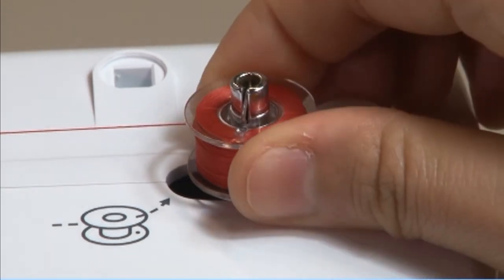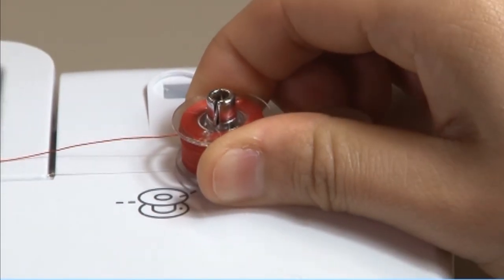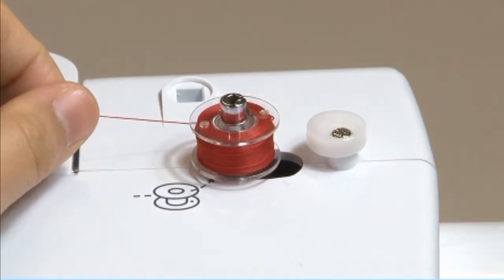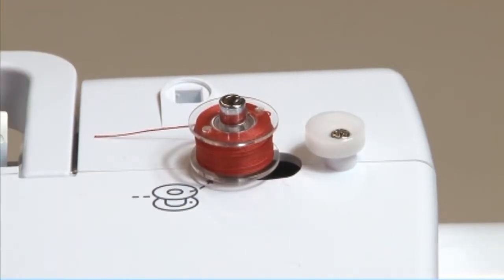Push the bobbin winder spindle to the left. Cut the thread and then remove the bobbin.